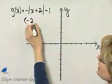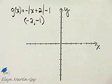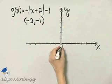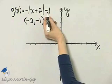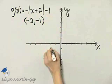Two units to the left and one unit down. So the vertex of the v is at negative 2, negative 1. The opposite of this and then whatever this is. So negative 2, negative 1.